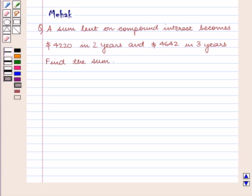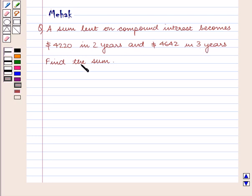Hello and welcome to the session. In this session we are going to discuss the following question: A sum lent on compound interest becomes $4,220 in 2 years and $4,642 in 3 years. Find the sum.